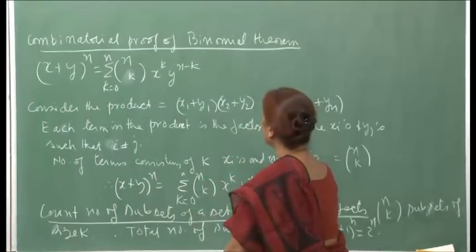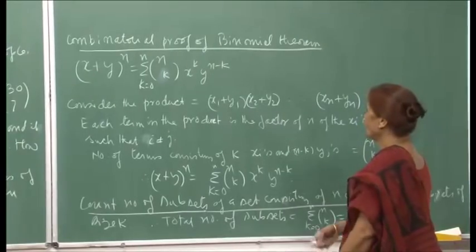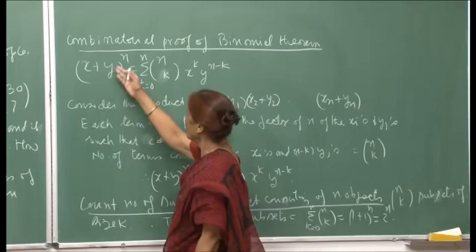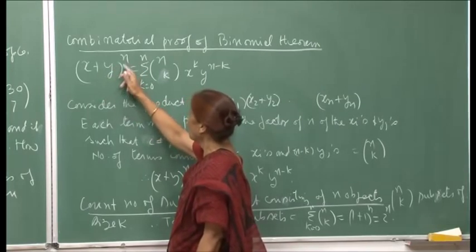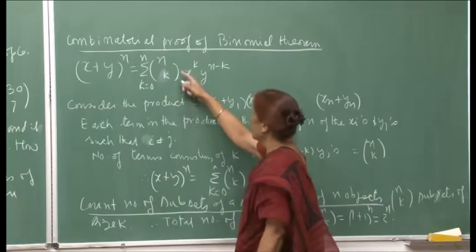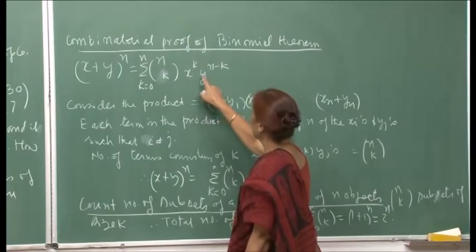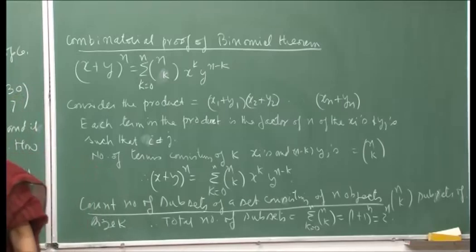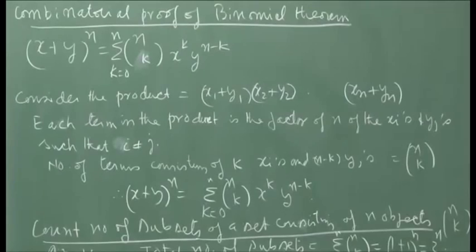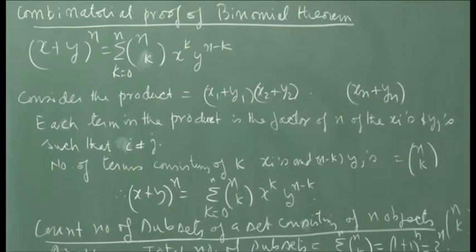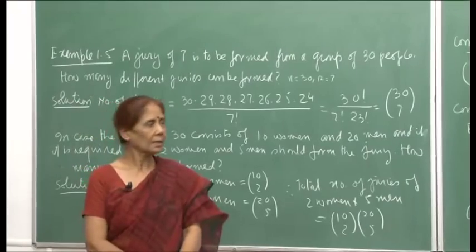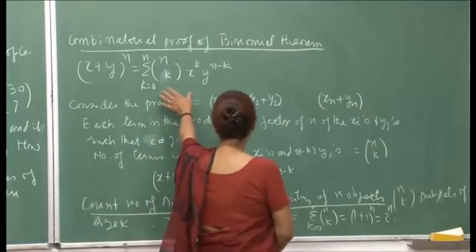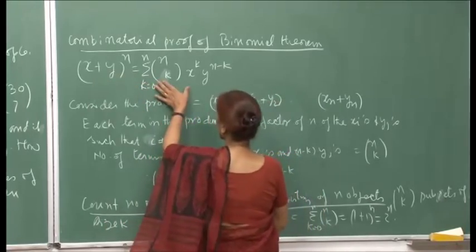Through these examples I am trying to make the concept clear. Now, all of you have used the binomial theorem: the expansion of (x+y)^n equals the sum over k of C(n,k) × x^k × y^(n−k). Let me give you a combinatorial proof of the binomial theorem using the concept of counting we have learnt.